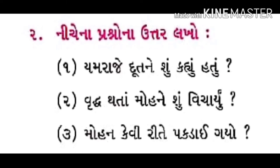નીચેના પ્રશ્નોના ઉત્તર લખો — આ પ્રશ્નોના ઉત્તર બે થી ત્રણ વાક્યના રહેશે. નંબર એક: યમરાજે દૂતને શું કહ્યું હતું? જ્યારે દૂત મોહનને લીધા વિના યમરાજ પાસે પાછો ફરે છે, ત્યારે યમરાજ ગુસ્સે થાય છે — એ જવાબ તમને પાઠ્ય પુસ્તકમાં મળી રહેશે. નંબર બે: વૃદ્ધ મોહને શું વિચાર્યું હશે? — વૃદ્ધ મોહને વિચાર્યું કે હવે મૃત્યુ નજીક છે, તો કોઈ એવું કાર્ય કરી જઈએ જેથી લોકો ઘણા વર્ષો સુધી યાદ રાખે.